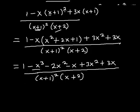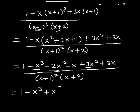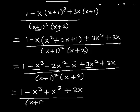Now collecting like terms: −x³ has no like terms. Then −2x² + 3x² gives +x². Then −x + 3x gives +2x. So the final answer is (−x³ + x² + 2x) divided by (x+1)²(x+2). And that is how we simplify algebraic fractions. See you in the next video — thank you very much.